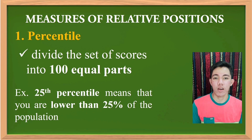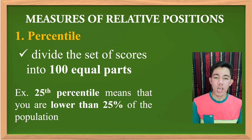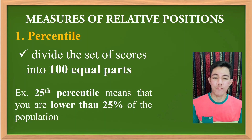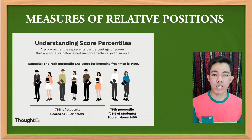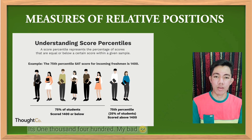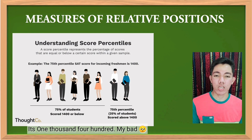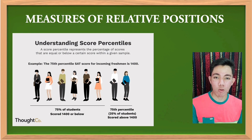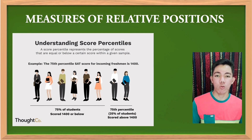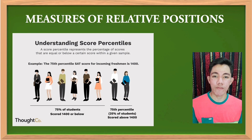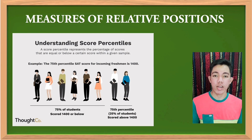For example, the 25th percentile means that you are lower than 25 percent of the population. Now, for example, the 75th percentile SAT score for incoming freshmen is 14,000. When we say 75th percentile, it means 75 percent of students scored 14,000 or below, and the remaining 25 percent of students scored above 14,000.